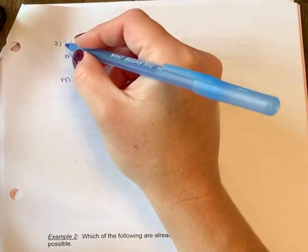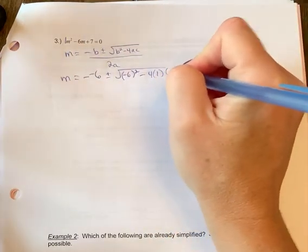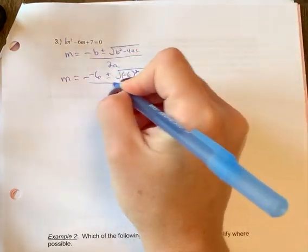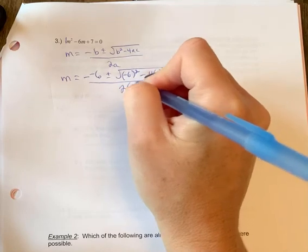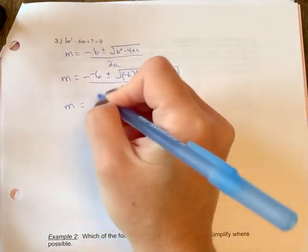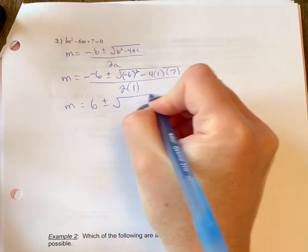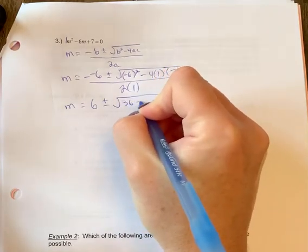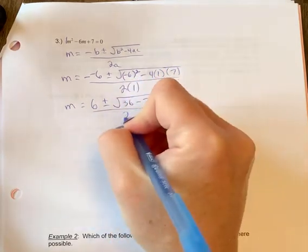Minus 4a is 1. Remember, if you don't see the number, it's 1. C is 7 over 2 times 1. All right, so 2 negatives make a positive, 6 plus or minus 36 minus 28 over 2.